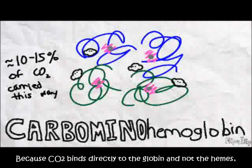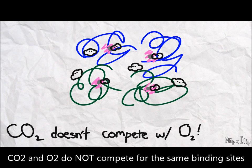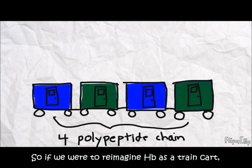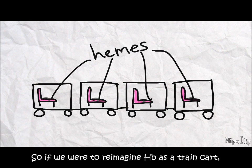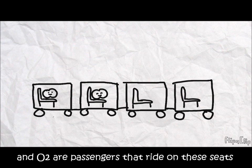Because carbon dioxide binds directly to the globin, not to the hemes, carbon dioxide and oxygen do not compete for the same binding sites. So, if we were to reimagine hemoglobin as a train cart, the seats would represent hemes, and oxygen are like passengers that ride on these seats.